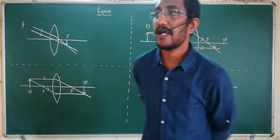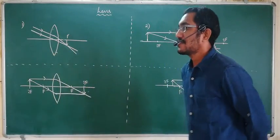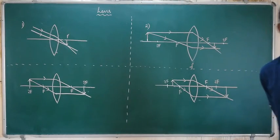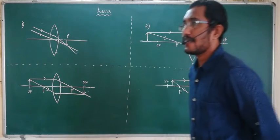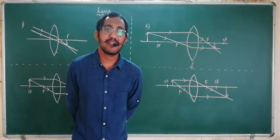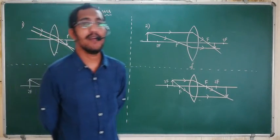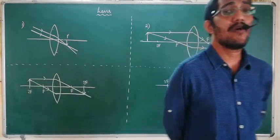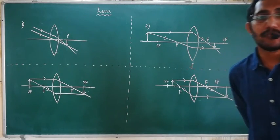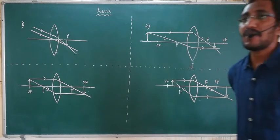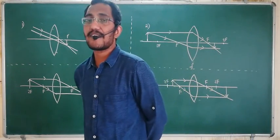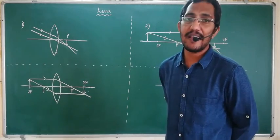Hello friends. In this video I am going to explain the relation between object and image for lenses. As the object moves towards the lens, then image will be more away from the lens. And as the object moves away from the lens, then image will be more towards the optical center of the lens, means towards the lens.